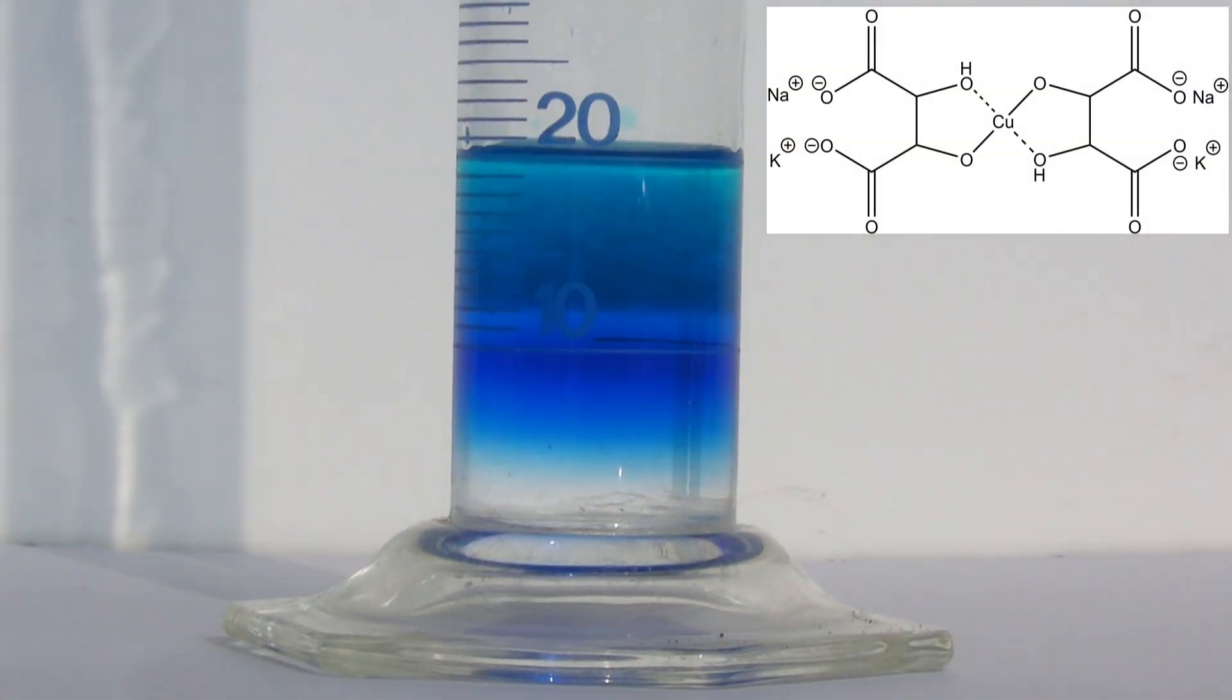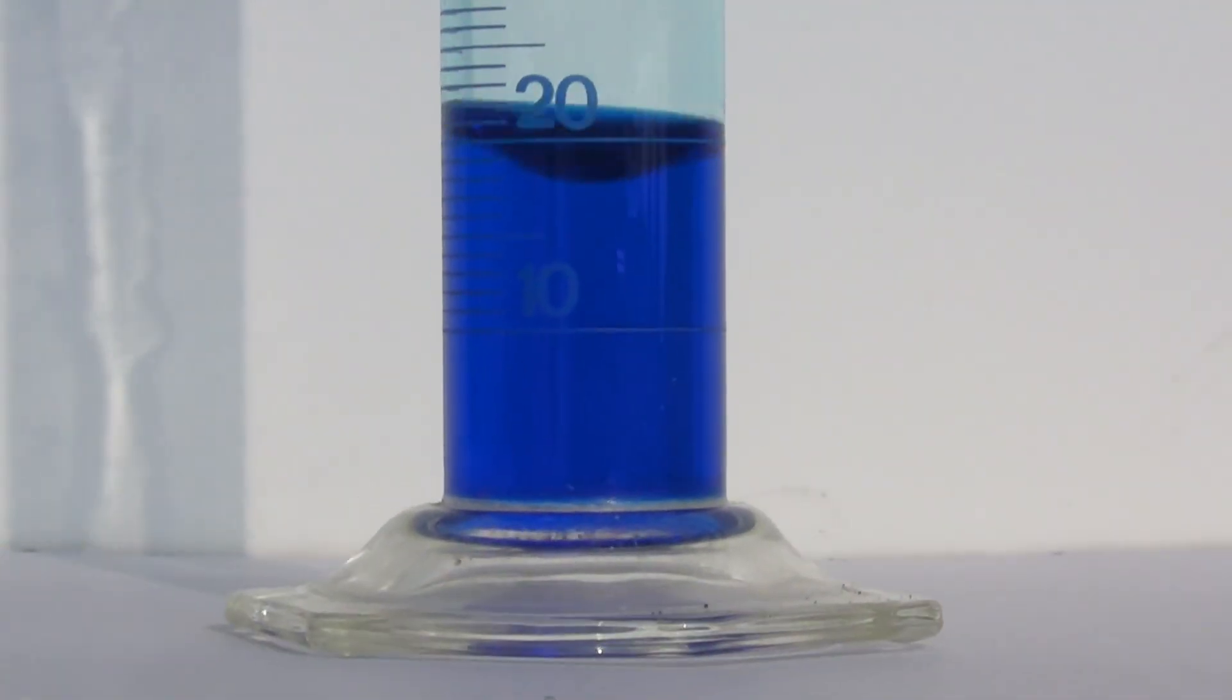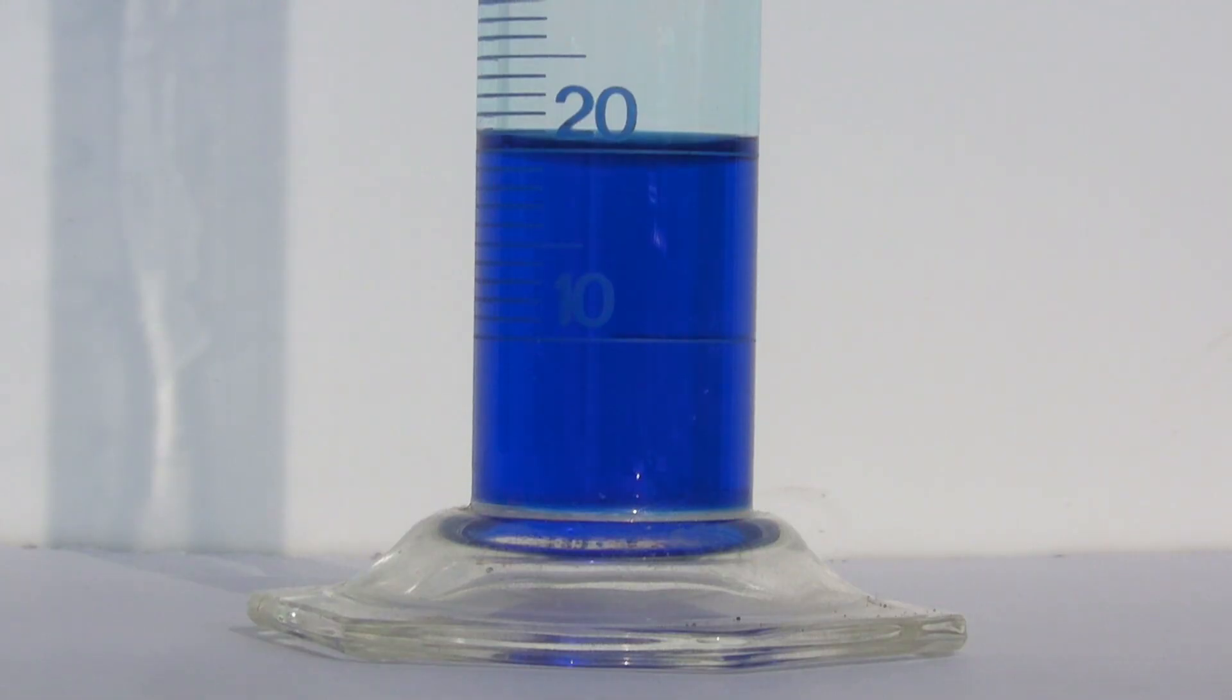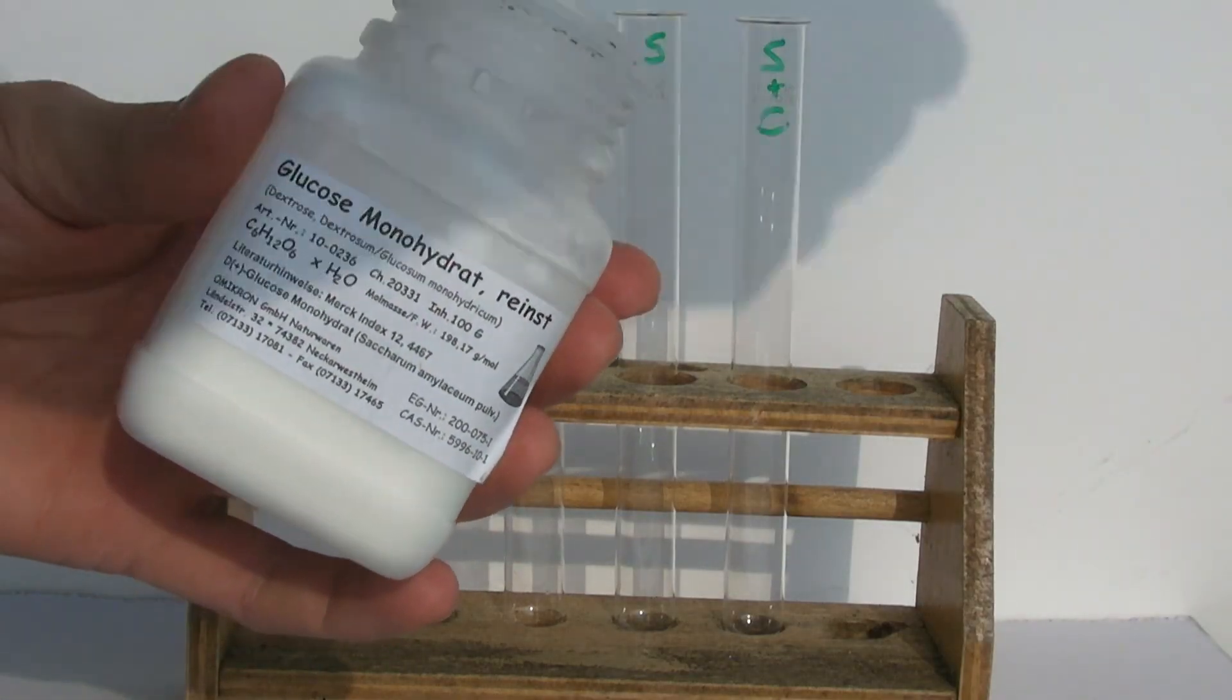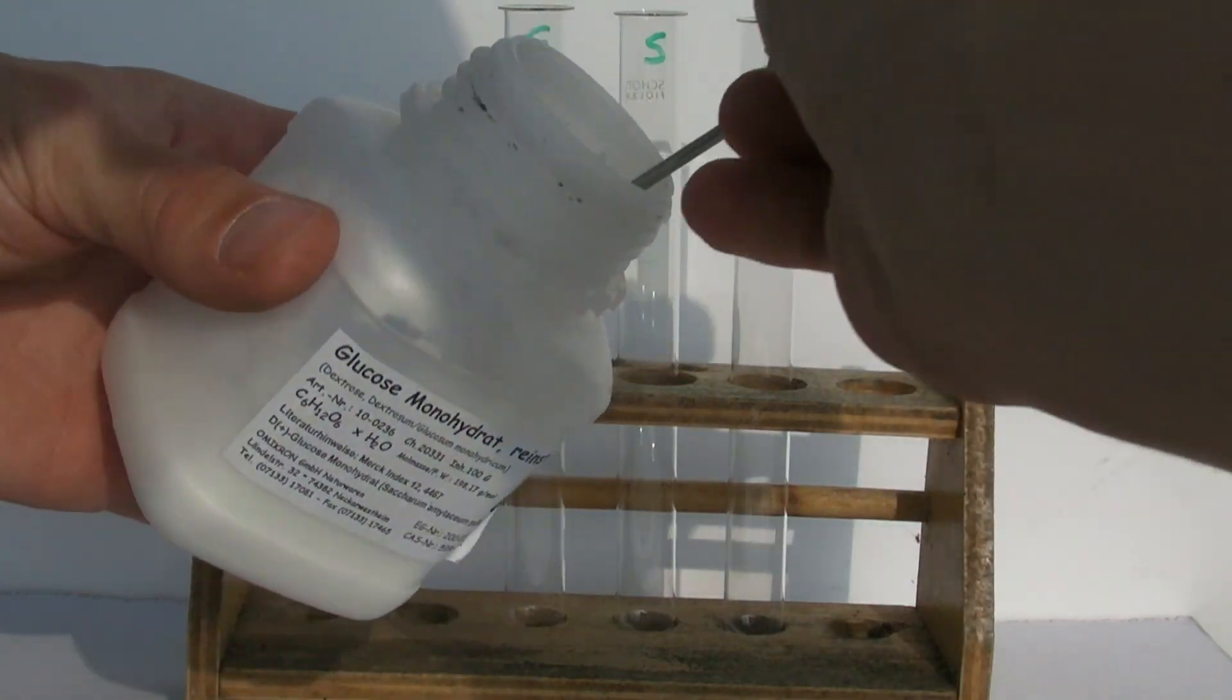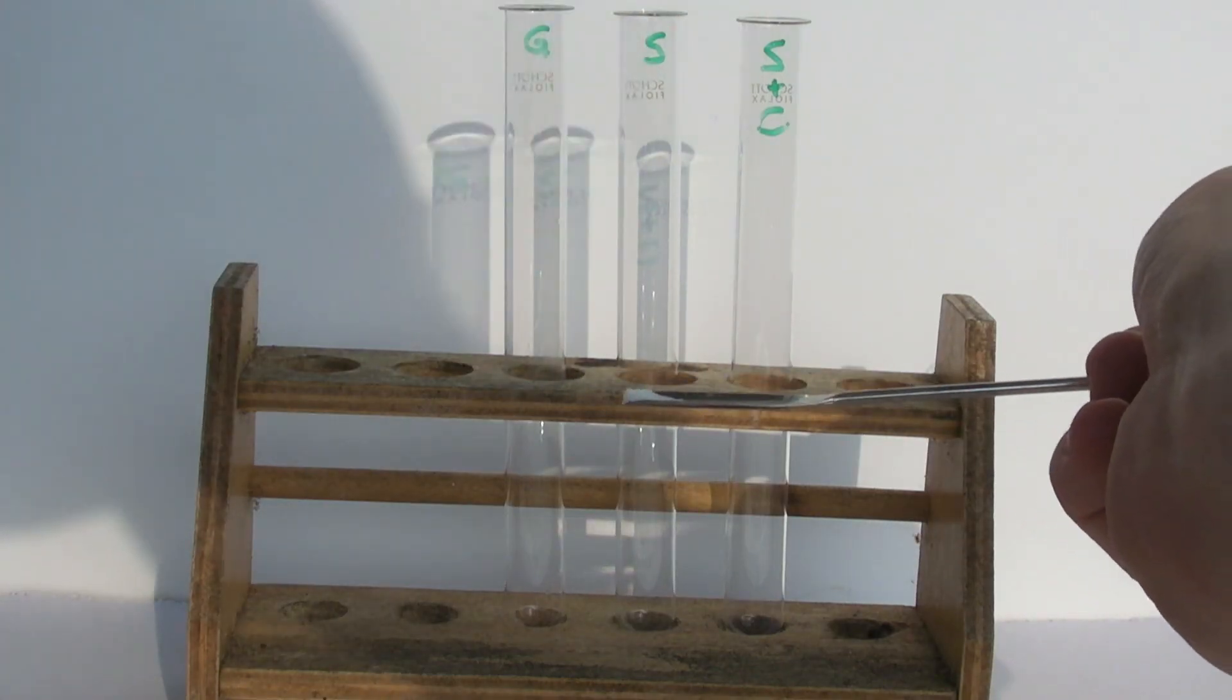The copper ion in the complex is easily reduced by many reducing compounds. Commonly, the Fehling's reagent is used to test for reducing sugars. For this, the reactions of glucose and sucrose with the Fehling's reagent are compared.